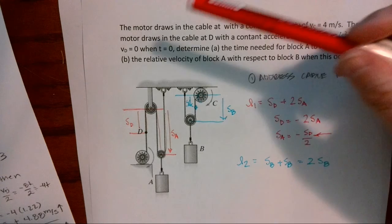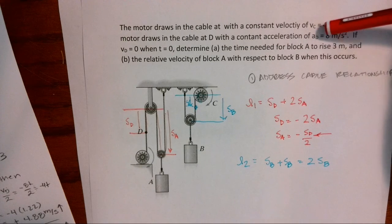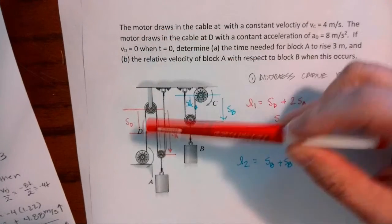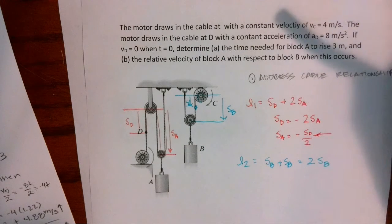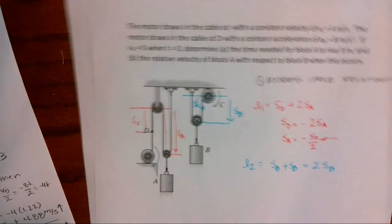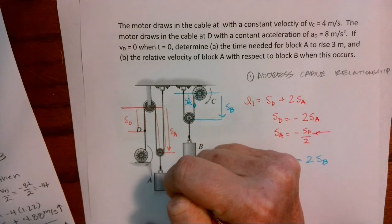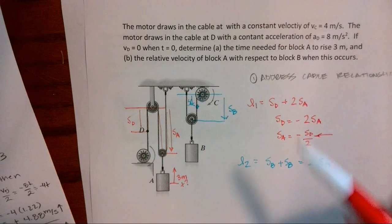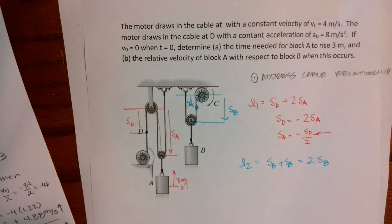The motor draws in the cable at D with a constant acceleration of A equals eight meters per second squared. If the velocity at D is zero when time equals zero, so we're starting from rest, determine the time needed for block A to rise three meters. So we want this to rise three meters and we want to find the time. And then the relative velocity of block A with respect to block B when this occurs.